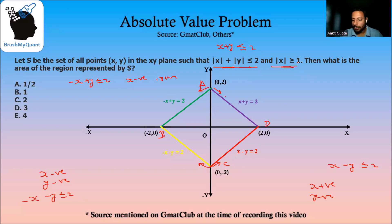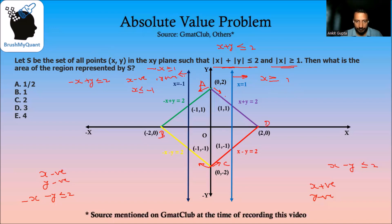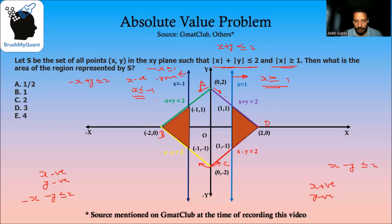Now let's look at |x| ≥ 1. We draw x = 1. When x is positive, we open this as x ≥ 1, meaning all values going towards the right. When x is negative, we open the absolute value as -x ≥ 1, or x ≤ -1, going towards the left. The intersection of x ≥ 1 and x ≤ -1 with the square gives us these two triangles, and we need to find their area.